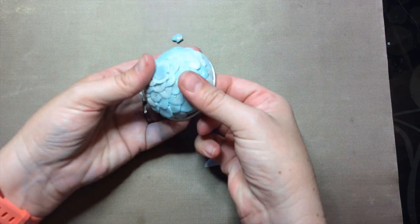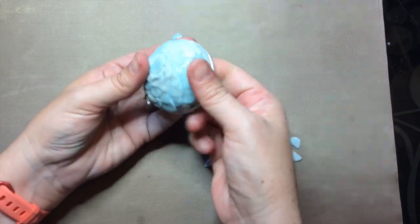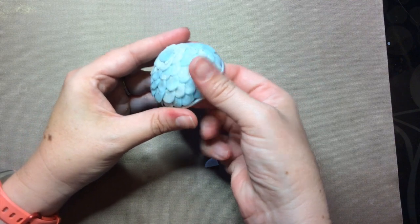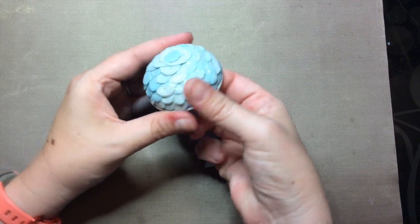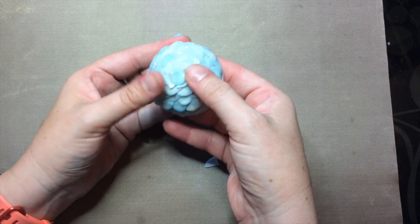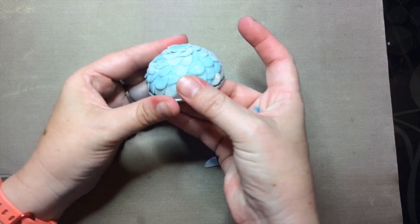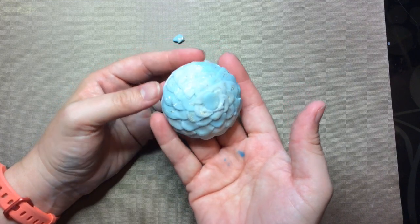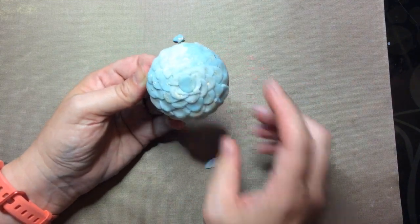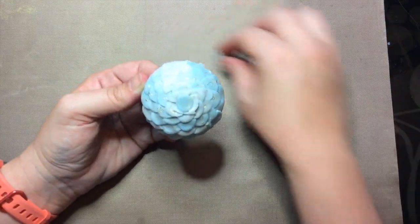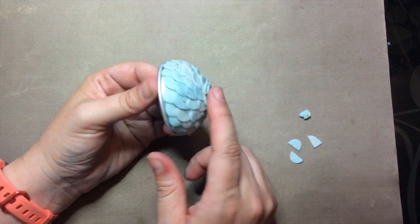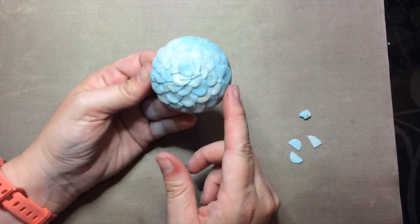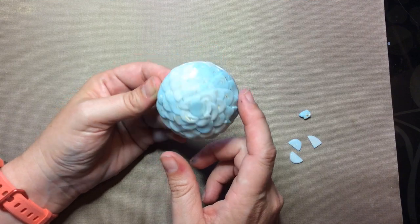And then I'm going to gently press down all my scales because I don't want this to be sticking out. I just want it to be pressed down and touching each other. And now we're going to go in for the first baking and that is going to be, because this is all primo, it's going to be 275 for 30 minutes.